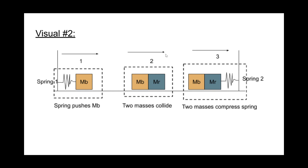For this problem, we are trying to solve for the maximum distance that the right spring is compressed by the boxes. In this visual, which represents the process of the problem: in step one, the blue box is sitting at rest against a compressed spring, which will then decompress and push the blue box to the right. In step two, the blue box clashes into the red box, forcing them both to move right. In step three, both boxes stuck together come into contact with spring number two and cause it to compress.